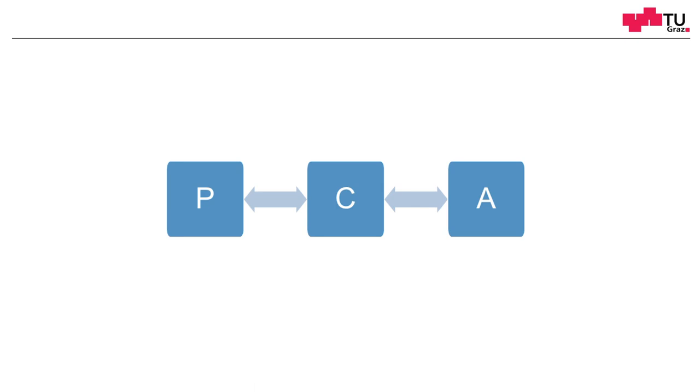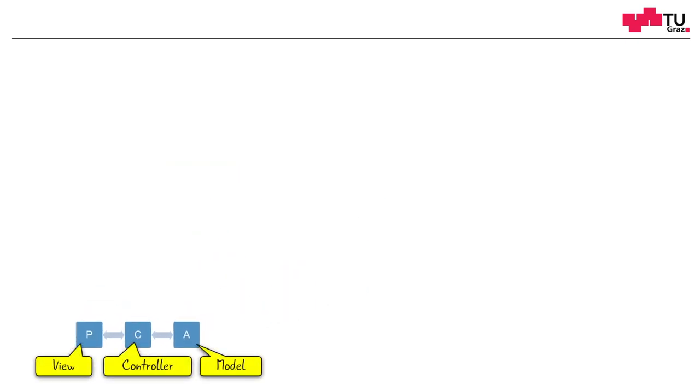Let's see how this can look like. Imagine this is one component. Remember that the presentation is the view, the control is the controller, and the abstraction represents the model of our component. And now we can connect this with another component, for example like this.